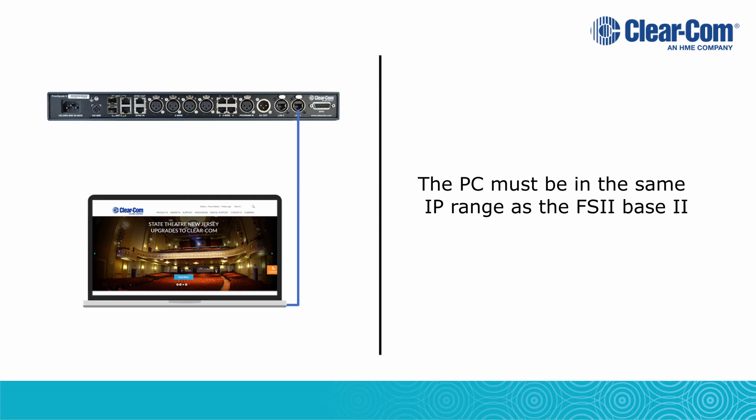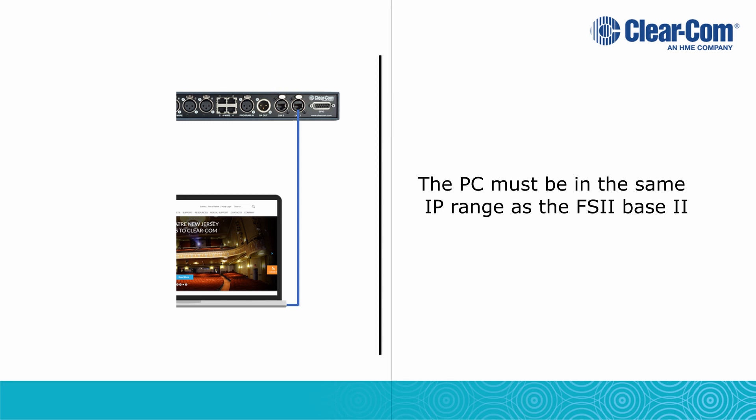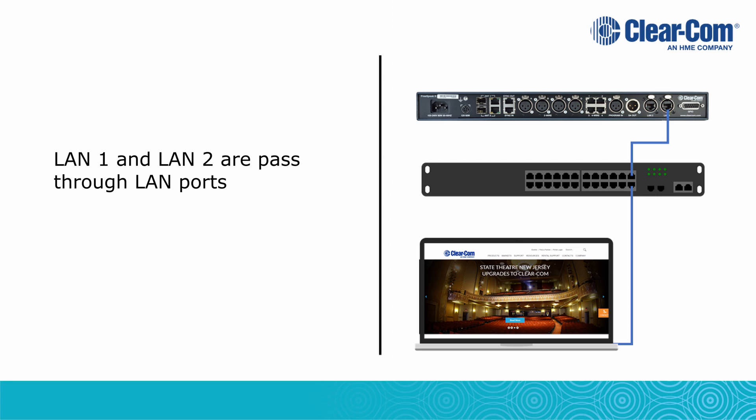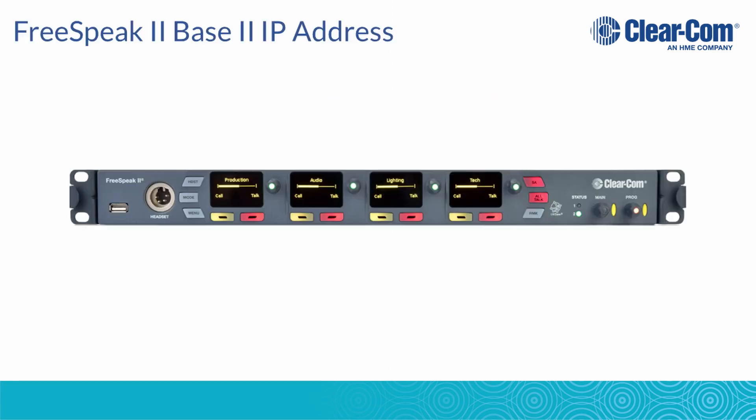The CCM can be accessed by connecting your computer to either the LAN 1 or the LAN 2 port on the rear of the Freespeak 2 base station, or by connecting your computer to the same network as the Freespeak 2 base.